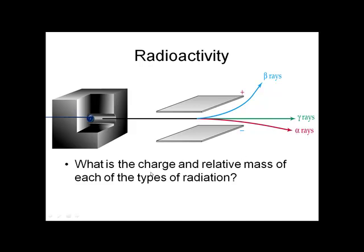So if we look here, I ask what is the charge and relative mass of each of the types of radiation. We have our alpha particle. Since it's being pulled towards the negatively charged plate, the alpha particle must be positively charged. The beta particle, getting pulled towards the positive plate, must be negatively charged. And the gamma ray, which just goes straight through the middle, this particle must have no charge.